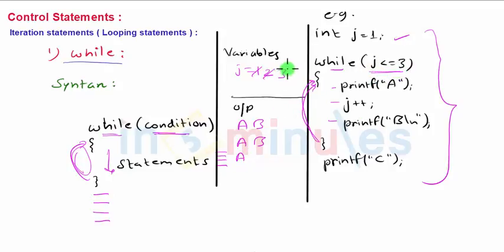Again prints value A, then j plus plus—j becomes 4—it executes printf B, then jumps up and checks the condition. This time the condition is false. It leaves the loop and just goes down to the printf C statement and will continue further. That is how a while loop works.